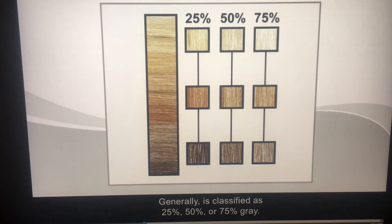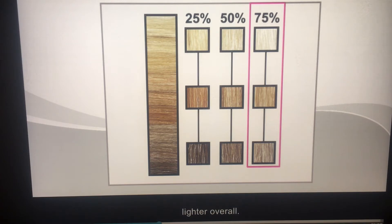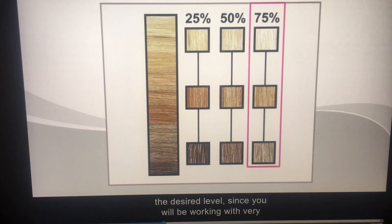Gray hair is found in every field of hair color from dark to medium to light, and is generally classified as 25%, 50%, or 75% gray. As a general guide, if a client has a very high percentage of gray — 75% to 80% — the hair will appear lighter overall. In this case, apply a color that is one level darker than the desired level, since you will be working with very little pigmented hair.